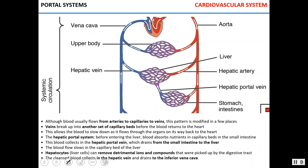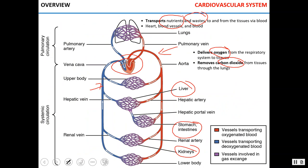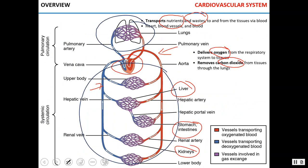Before discussing cardiac pathologies, it is worth highlighting a few points about circuits and portal systems. There is a pulmonary circuit and a much larger systemic circuit; however, interestingly, the volume of blood in both circuits is the same at any given moment. This explains why pressure and resistance in the systemic circuit are higher than in the pulmonary circuit.